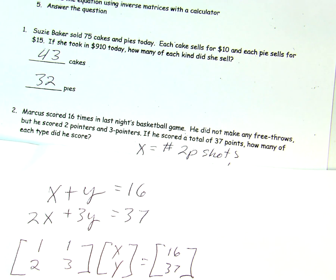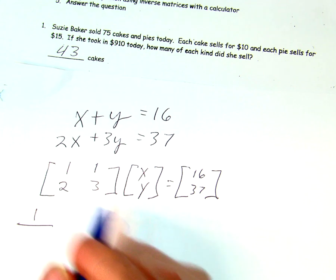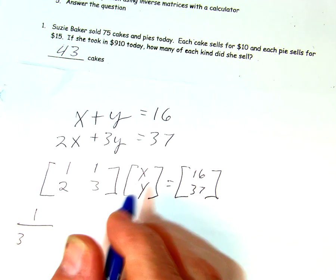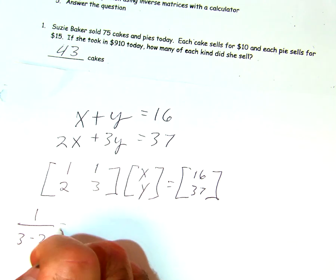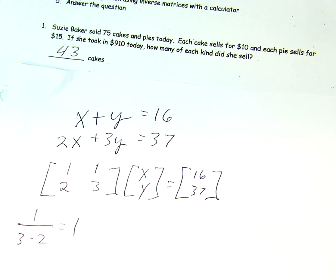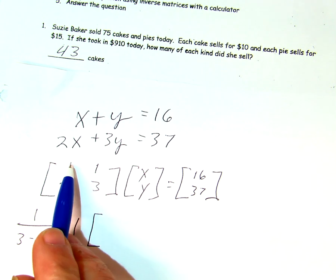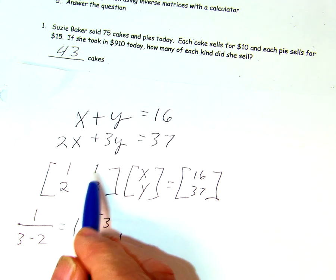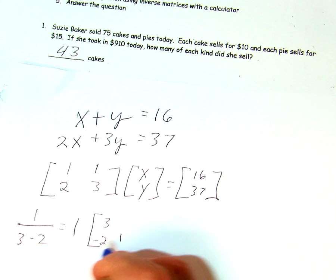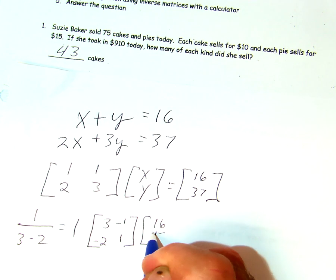We've got to find that inverse. So, it's 1 over the determinant. And the main diagonal is 1 times 3 is 3. The other diagonal is 1 times 2 is 2. And, of course, that just equals 1. So, we can ignore that. 1 times anything we create here will be that thing. So, now we're going to switch the elements in the main diagonal and in the other diagonal make the signs opposite. And that's our inverse. Like I said, we can forget about the 1 because it does nothing. And we will multiply that times this matrix here, the 16 and the 37, just like last time.